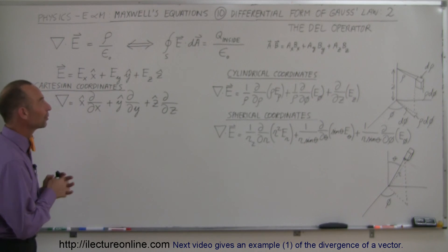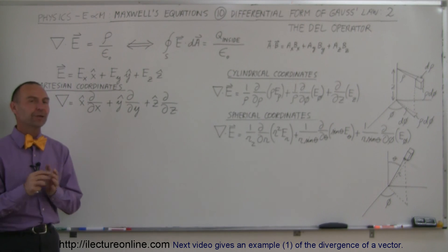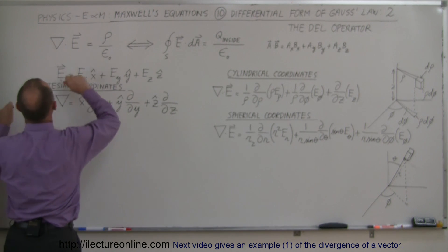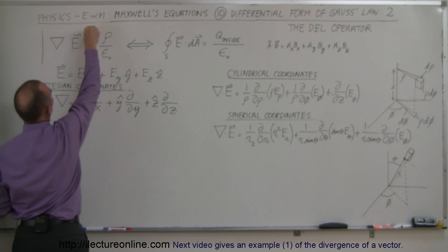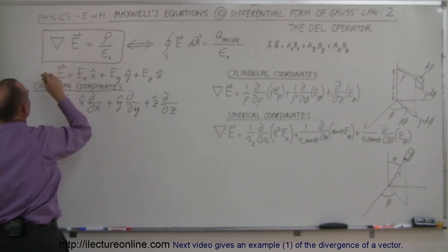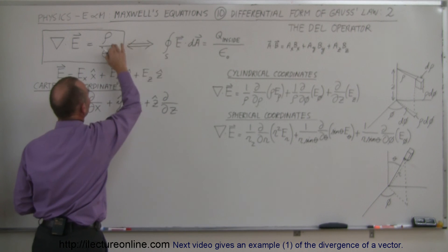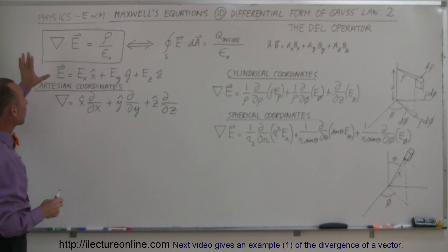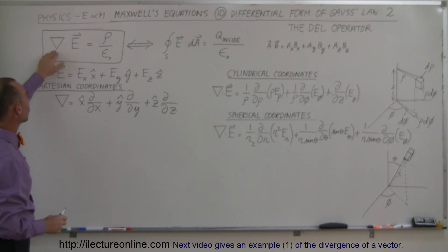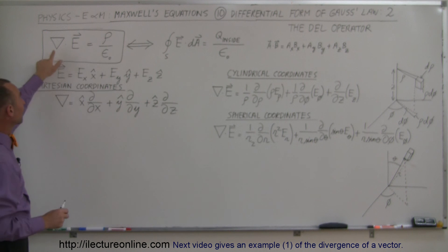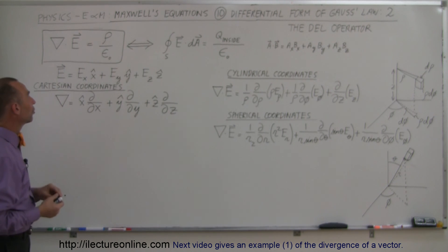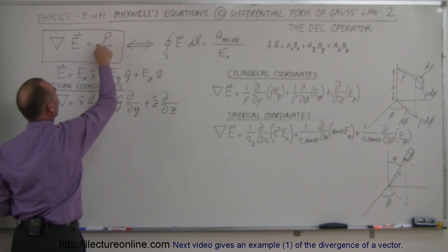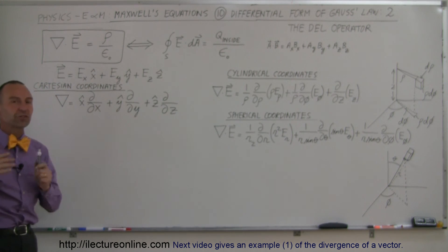Welcome to iLectra Online. Here we're going to take a look at the del operator. For us to be able to understand the differential form of Gauss's law — which is right here, let me put a nice little box around it, because this is what we're trying to understand. We already saw in the previous video that it's mathematically equivalent to the integral form of Gauss's law, but now we want to physically understand what this really is. So we're going to understand what the del operator is, what the operation called the divergence means, and what we mean by the charge density in various physical situations.